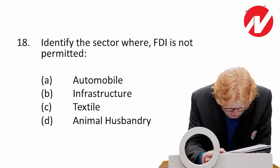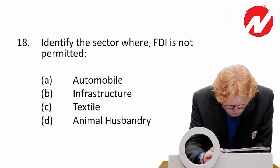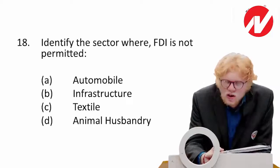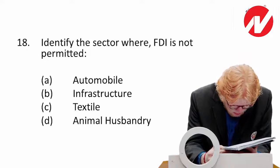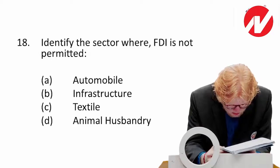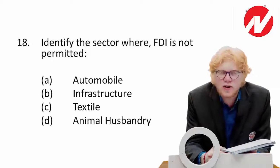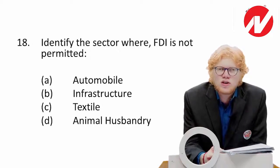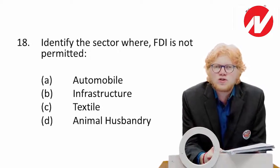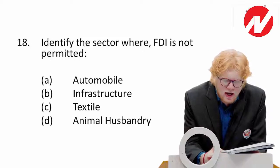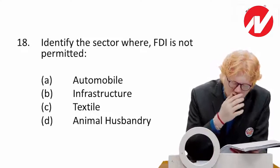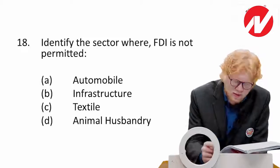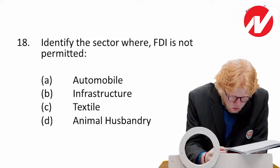Next: identify the sector where FDI is not permitted. The options are automobile, infrastructure, textile, and animal husbandry. Animal husbandry is the important one here — in India at the present time, foreign direct investment is totally prohibited in the field of animal husbandry. So this is the answer.